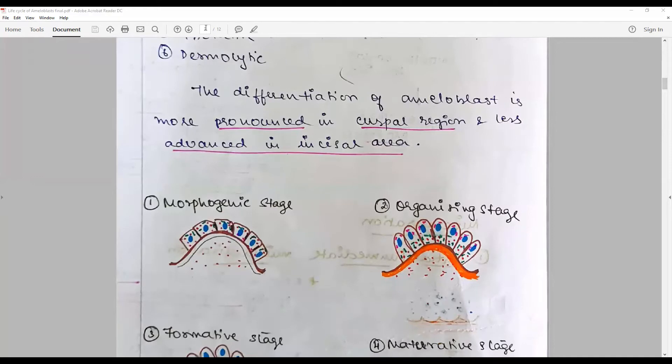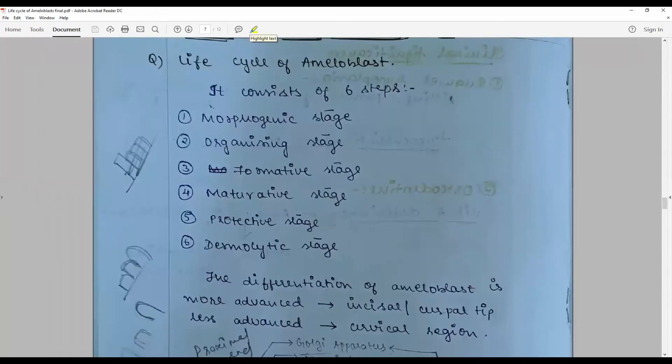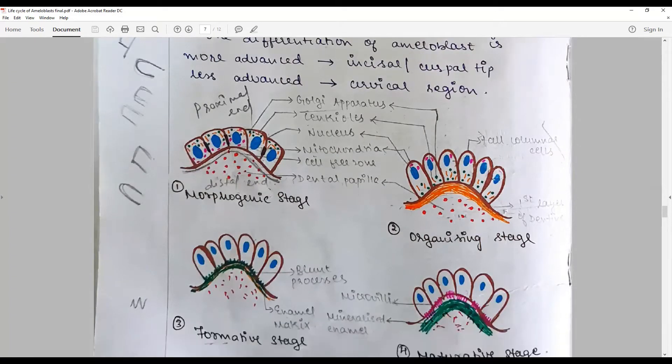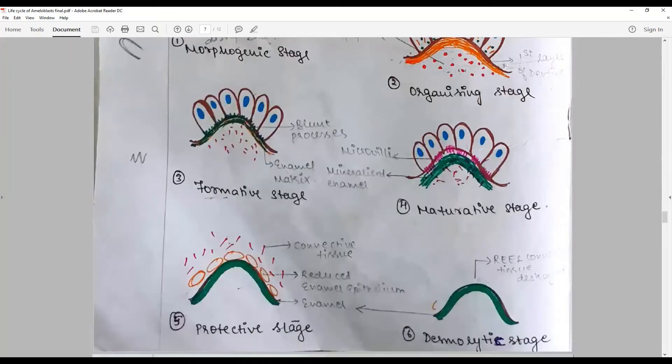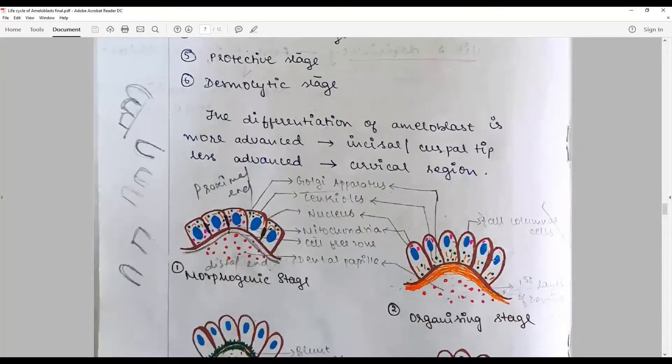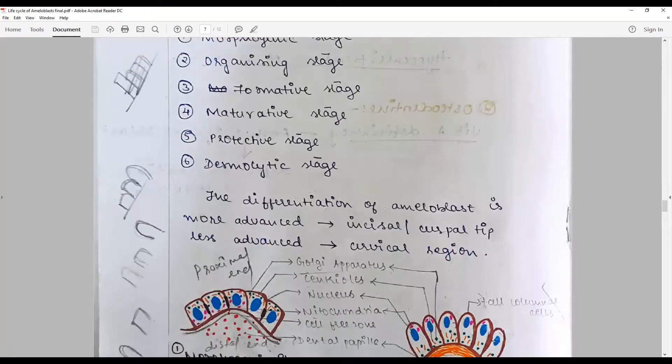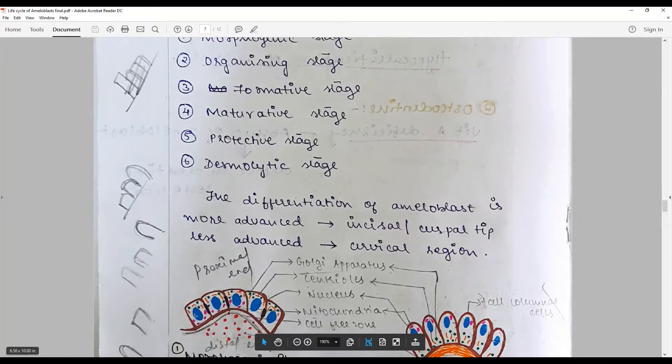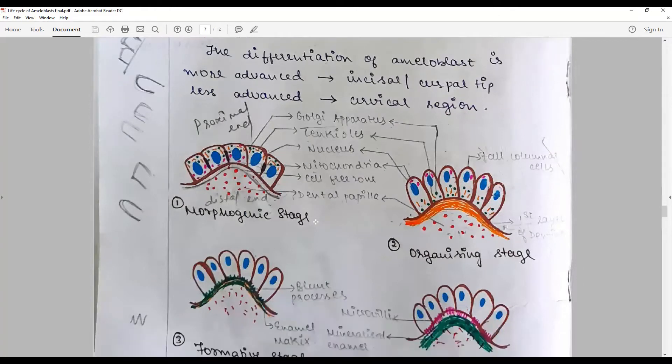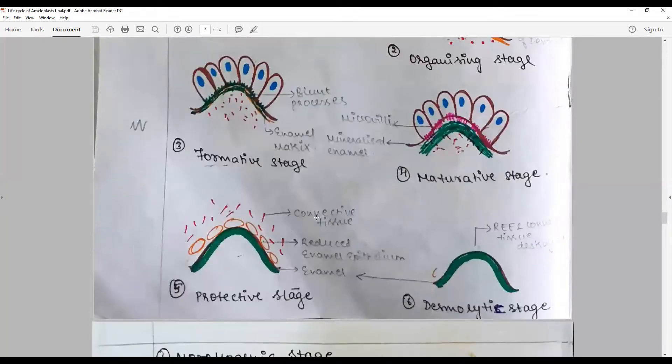The diagram I would recommend is this one. The candidate has marked all the parts and the color coding effectively: morphogenic, organizing stage, formative stage, maturative stage, protective stage, desmolytic stage—all the cell organelles where they move. See how the candidate has studied the transition from a short cuboidal to tall columnar, how the candidate has put in effort to correct the whole concept.